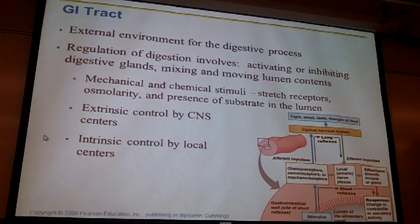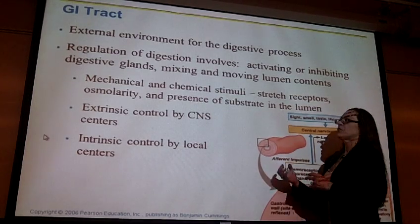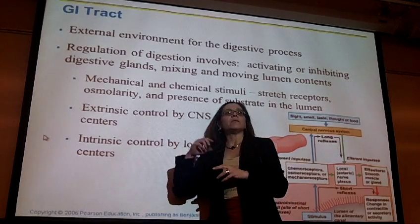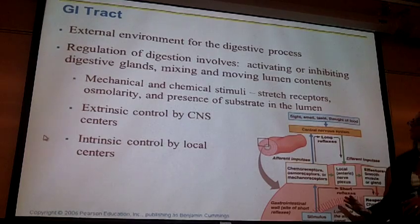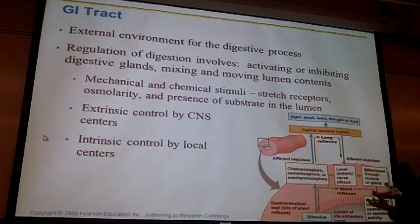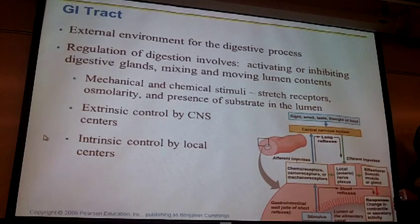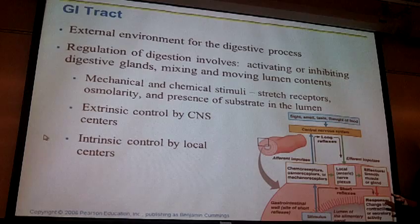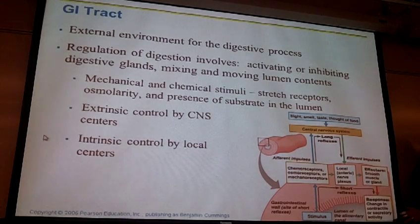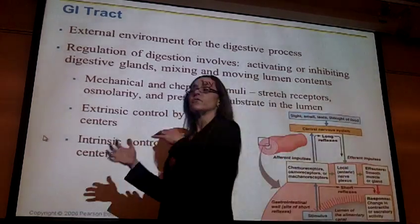The digestive system has its own nervous system — the enteric nervous system — contained entirely in the digestive tract. We can have control centers right there in the digestive tract, so we never need to send information through the spinal cord and up to the brain. These are called short reflexes. If the receptor, control center, and activated neurons are all in the digestive tract, those are short reflexes. They can still stimulate glands to release secretions and stimulate smooth muscle to contract.